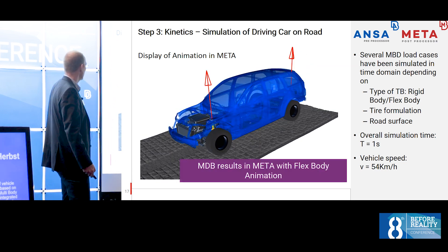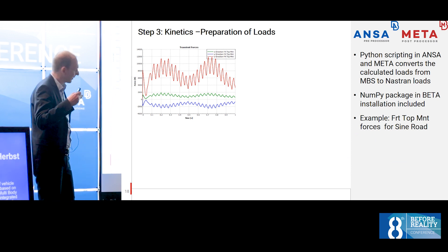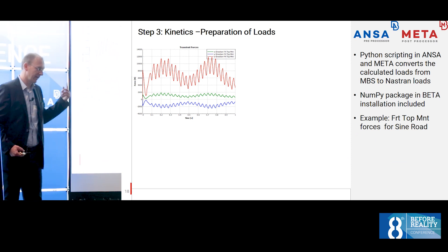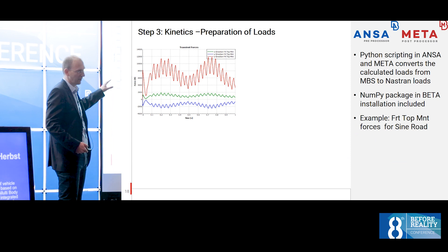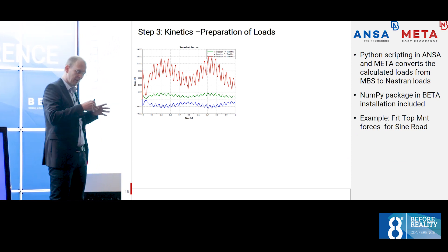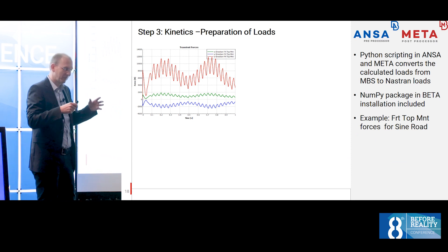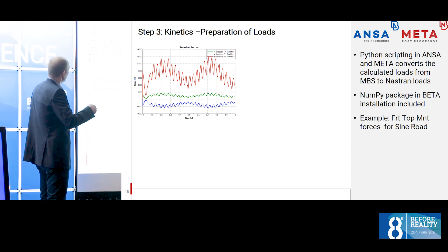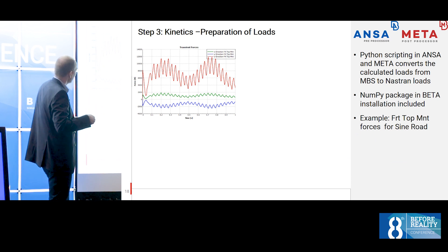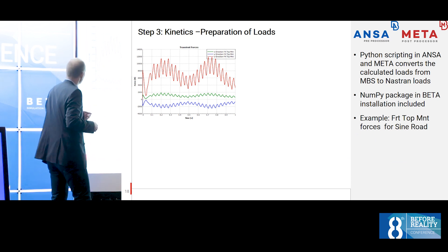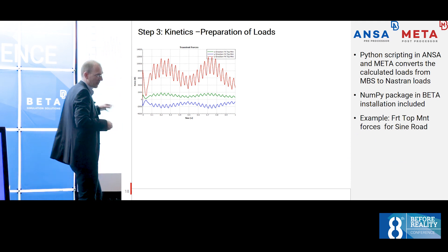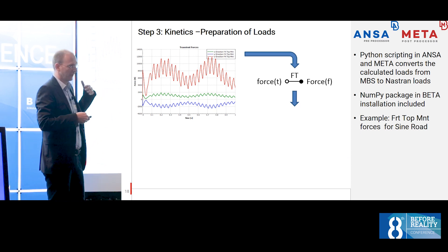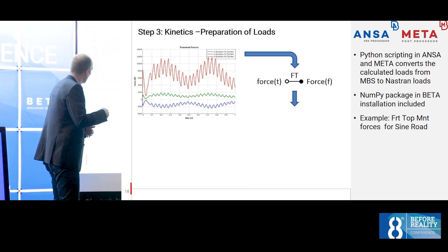The next step is to collect the forces. In kinetics, there are results for all the interface points. We had to collect all the force curves and put them together in order to get a Nastran load case — this required scripting. For the front top mount, you can see the three directions for the 26 Hz road, which is why we see a frequency of 26 Hz in the curves. We also wanted frequency-domain responses, so we had to perform an FFT of all this, which we also did with scripting.